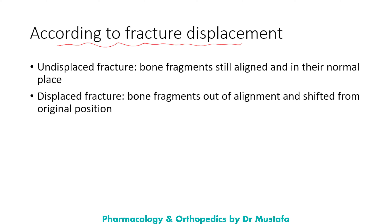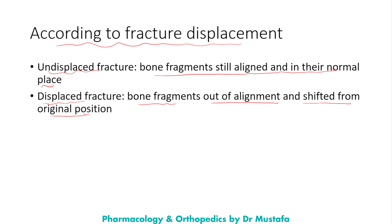Types of fractures according to fracture displacement: we have the undisplaced fracture and the displaced fracture. The undisplaced fracture is when the bony fragments are still aligned and in their normal place, while the displaced fracture is when the bony fragments are out of alignment and shifted from the original position.